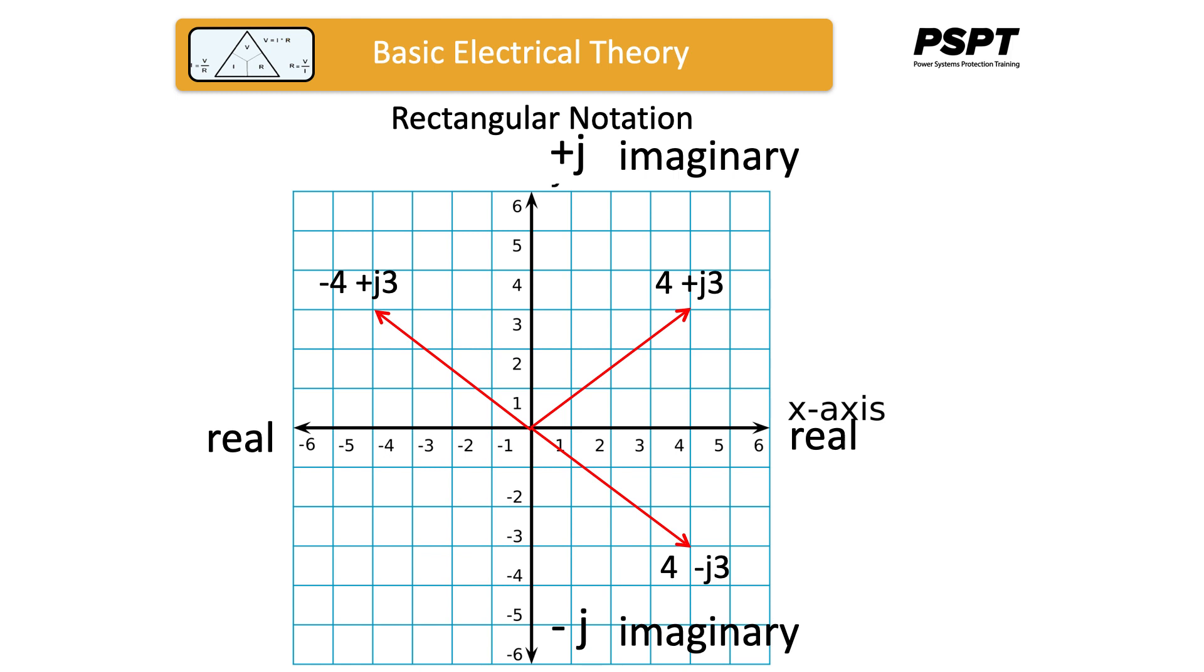And lastly, the one in the bottom right-hand quadrant of the graph is made up of plus 4 minus j3.